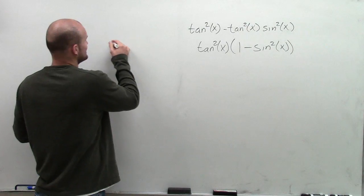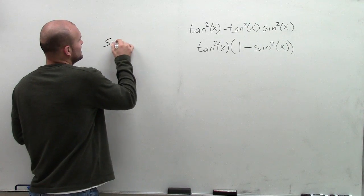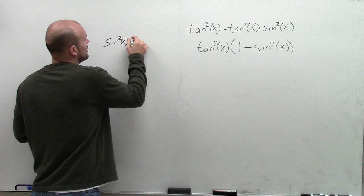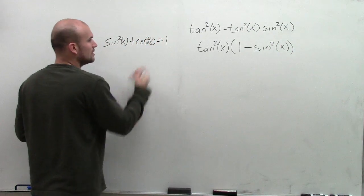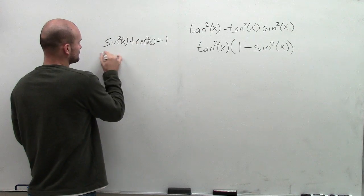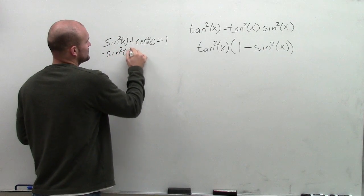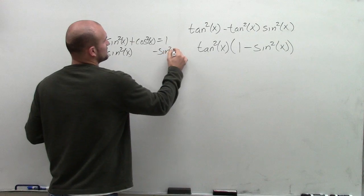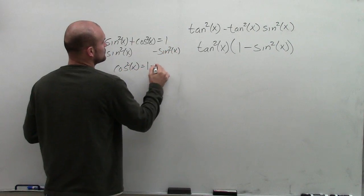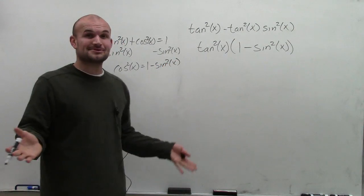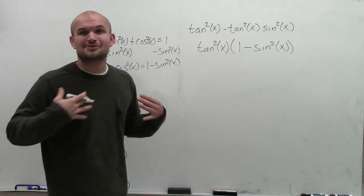So then I go back to using my Pythagorean identities, which says that sin²(x) + cos²(x) = 1. So therefore, if I subtract sin²(x) from both sides, what I have is cos²(x) = 1 - sin²(x).